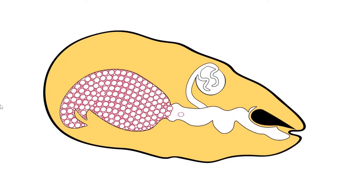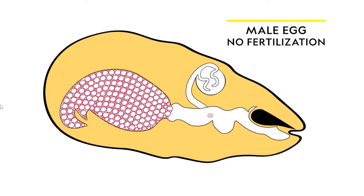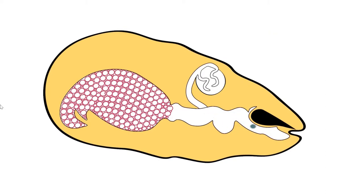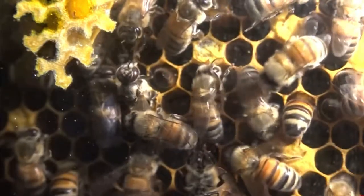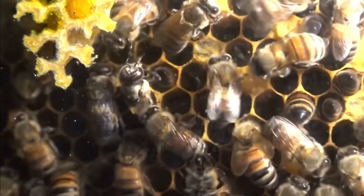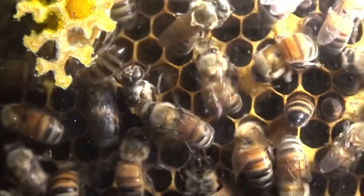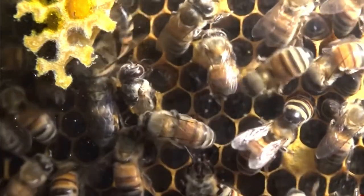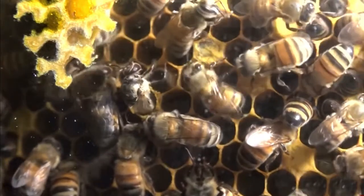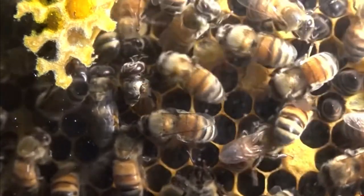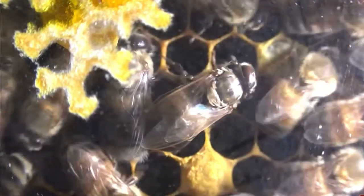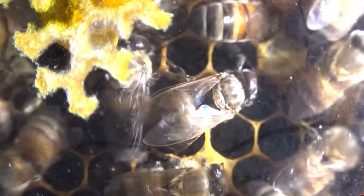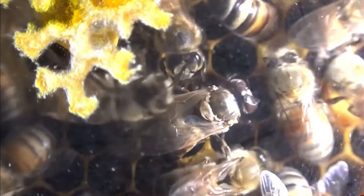Drones are male bees that develop from unfertilised eggs. They do not store or gather pollen or honey. As seen in the video, a little left of the centre, there is a drone hatching out. Unlike worker bees who go straight to cleaning post-hatch, these drones poke the nurse bees for food. The primary and singular function of drones for the colony is to mate.